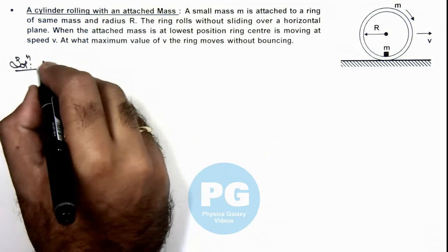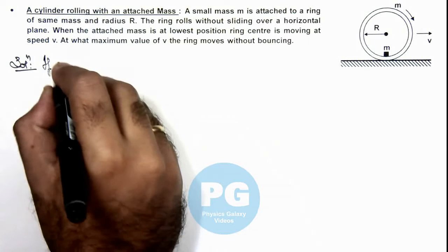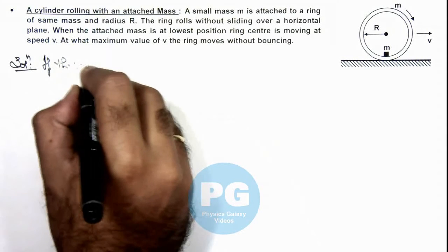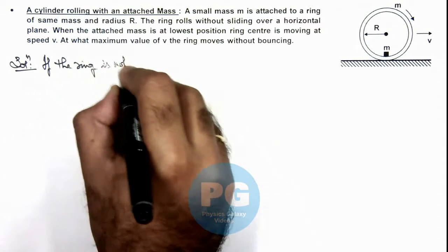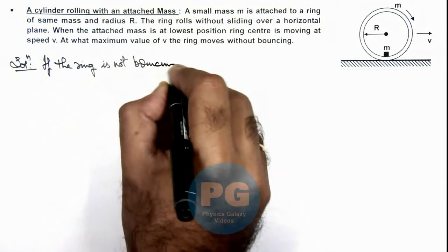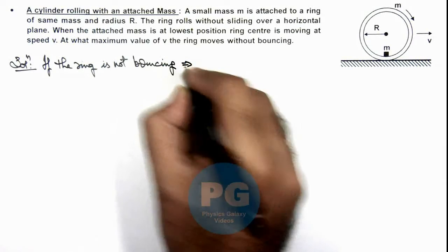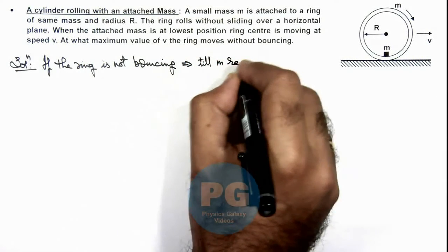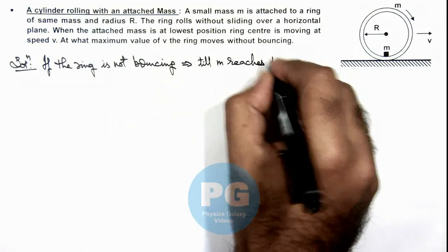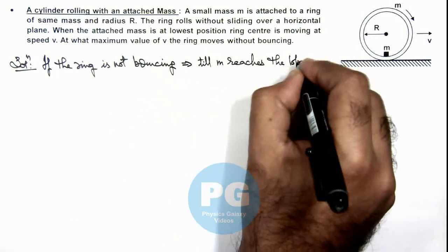So we can say if the ring is not bouncing, this implies till small m reaches the top most point, normal reaction should not be zero.